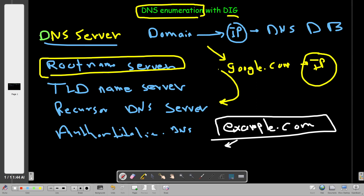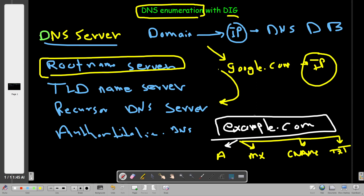For example, a domain should contain an A record, and it might contain MX records, CNAME records, and text records — these are the different kinds of DNS records. When you enumerate a domain, you'll most commonly encounter these four. An A record contains the IP address of the domain.